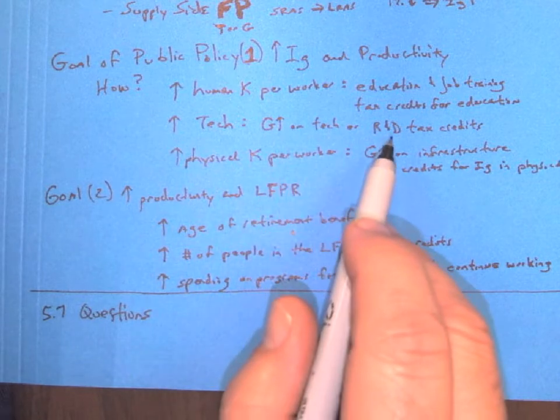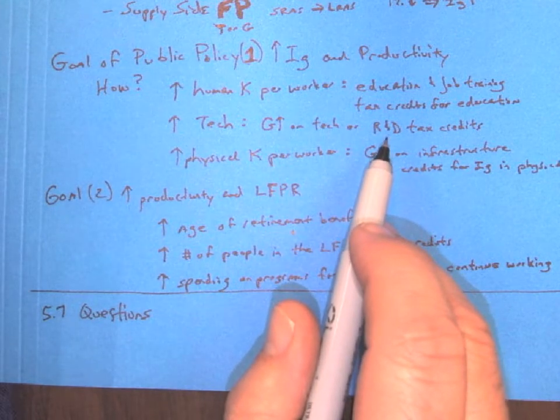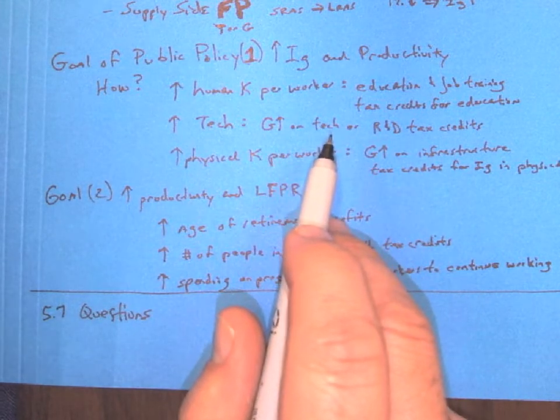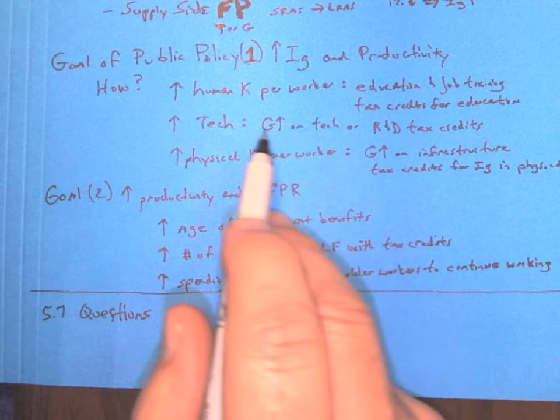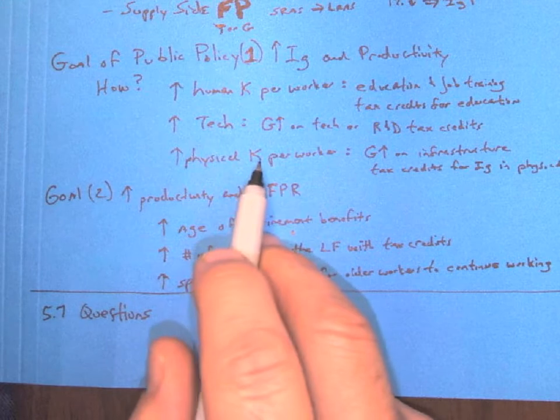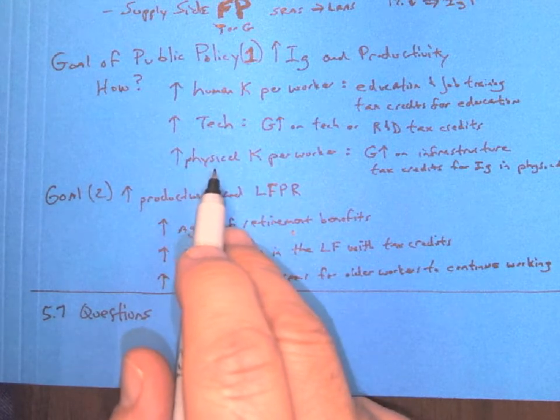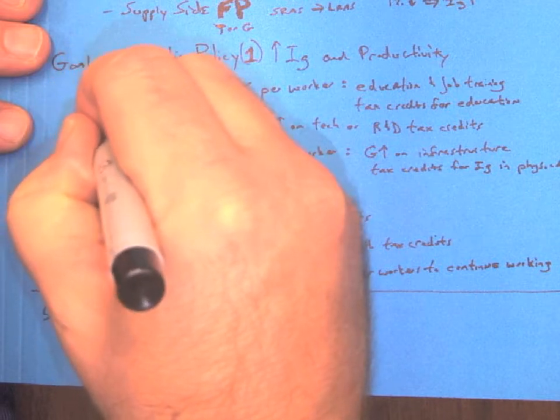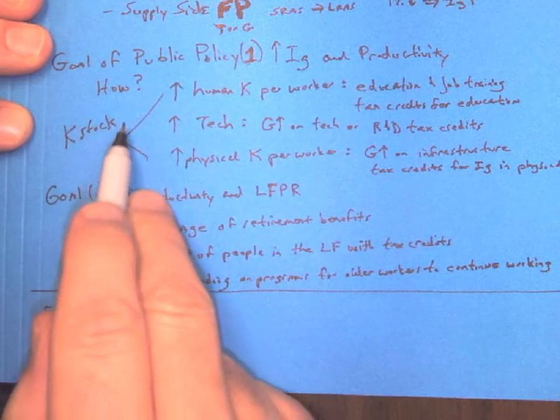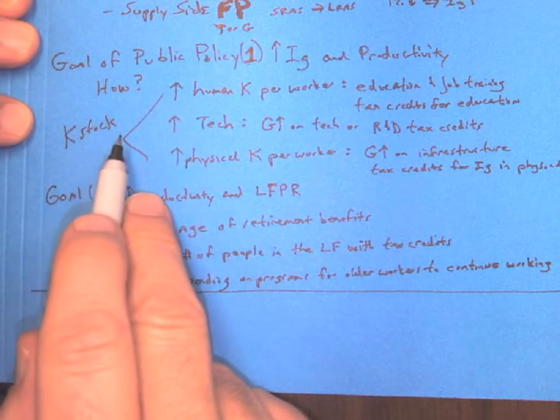Our technology, we can give tax credits for research and development. We can do subsidies for green energies or fossil fuel management, whatever it is that can increase our technology. And of course, we can look at physical capital. And these three things, remember, are our capital stock.